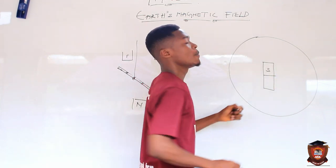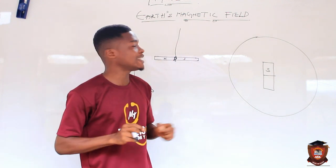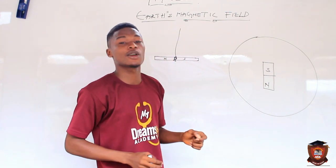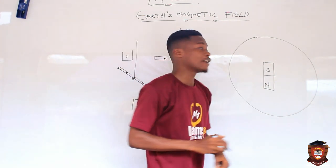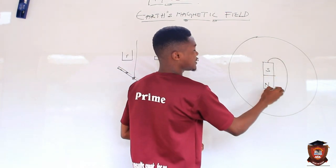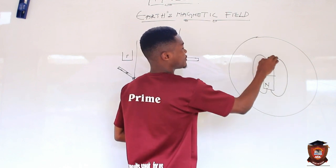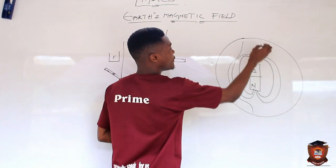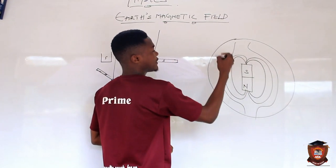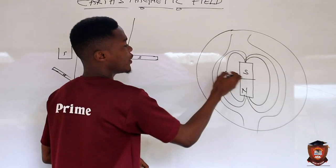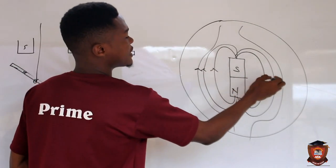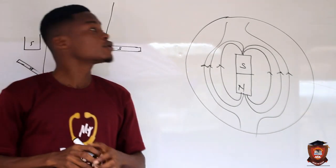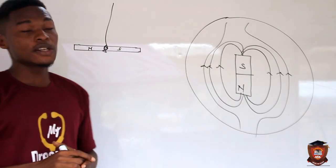That imaginary bar magnet has its south pole facing the north pole of the Earth — meaning the south pole of the imaginary bar magnet faces the northern hemisphere, and the north pole of that bar magnet faces the southern hemisphere. From the lines of forces we can draw something like this to represent the magnetic field of the Earth, pointing towards the south, because lines of force enter the south. That is the concept behind the Earth's magnetic field.